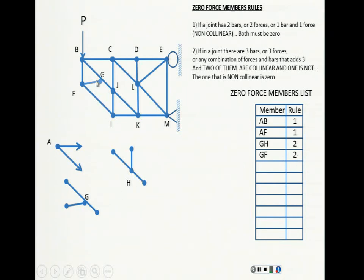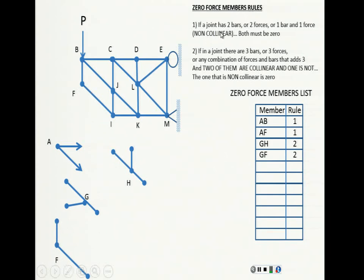Because GF is zero, I'm eliminating that from the drawing. When I eliminate it, look what happens at joint F: it now has two bars and they are non-collinear. Two bars, non-collinear — both must be zero. So both of those are zero, rule number one.